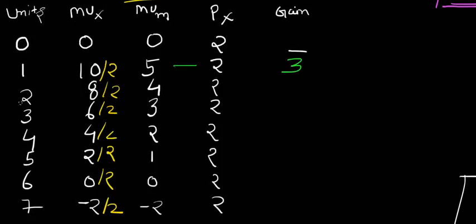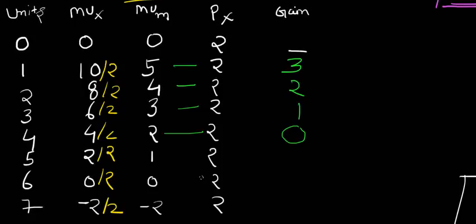As he increases consumption to the second unit, marginal utility declines due to the law of diminishing marginal utility, but there is still a gain of two rupees. For the third unit there is still a gain of one rupee. But when he consumes the fourth unit, the gain becomes zero — whatever money he is paying gives him satisfaction exactly equal to what he is paying. Here, MU_x ÷ MU_m equals P_x, which is the very first condition for consumer's equilibrium.